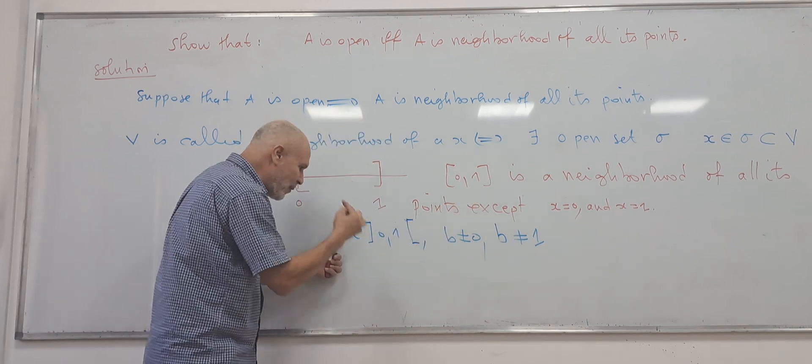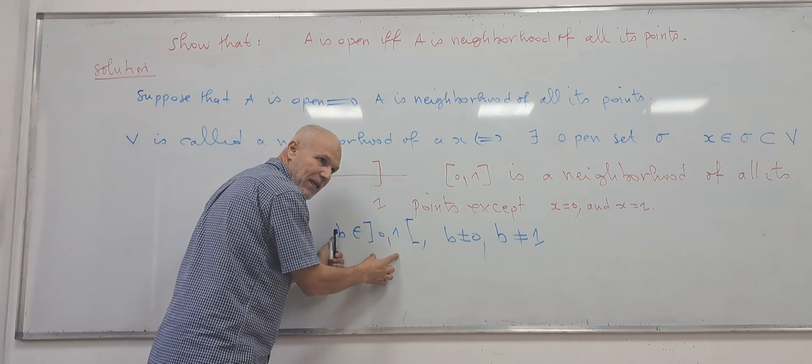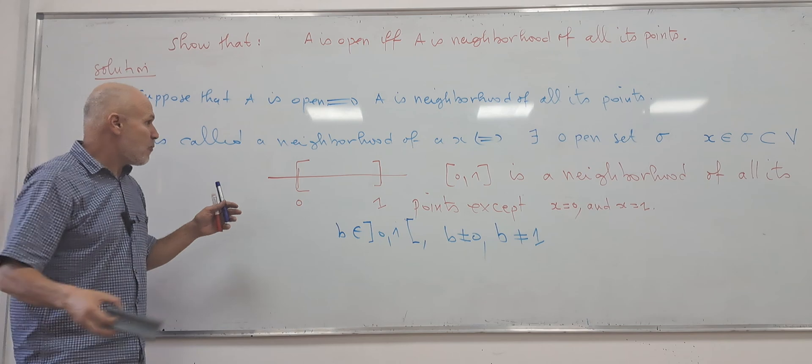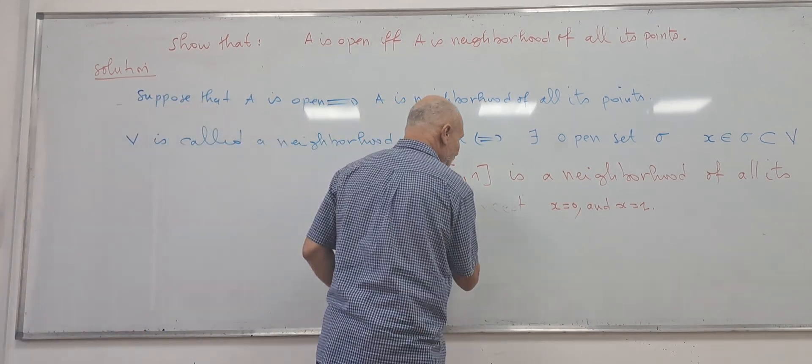So this set is a neighbor for all the points (0,1), the open. So if it is, if A is open, so A is a neighbor.